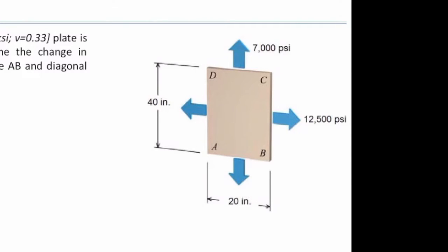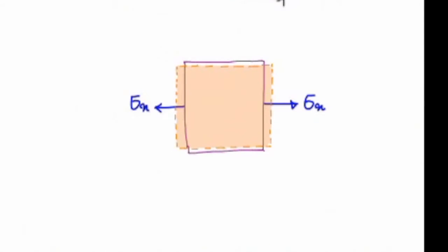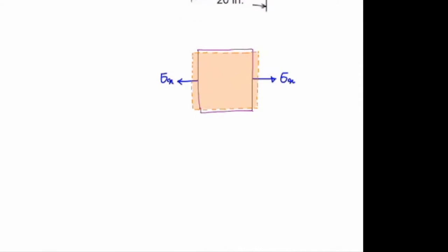Because I have stress in both directions. Sigma in X direction is 12,500 PSI, it is tension. And stress in the Y direction is 7,000 PSI. The stress in the X direction causes elongation in the horizontal axis, but I know that because of the Poisson effect, there would be a little contraction on sides. So I have to consider the effect of Poisson ratio in my analysis here. The same is true for Sigma Y.